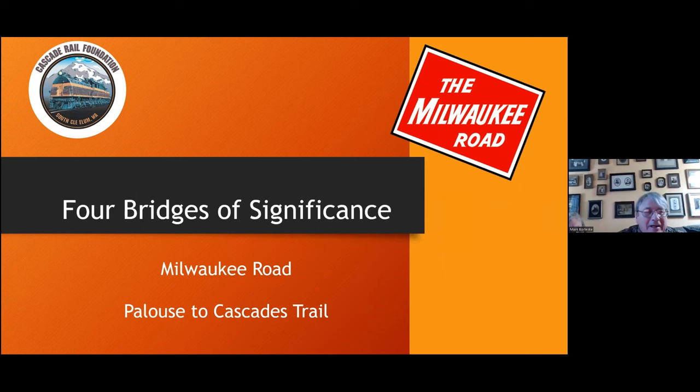Well, first off, welcome everybody to this presentation. It's entitled Four Bridges of Significance, and these four bridges are bridges formerly on the Milwaukee Road mainline between Puget Sound and eastern Washington. Each of these bridges, as you'll see, have a different construction technique and a different history and a different story.